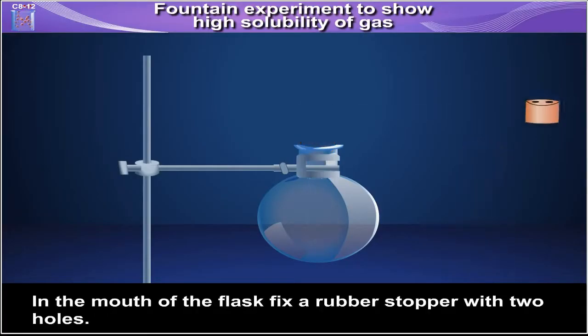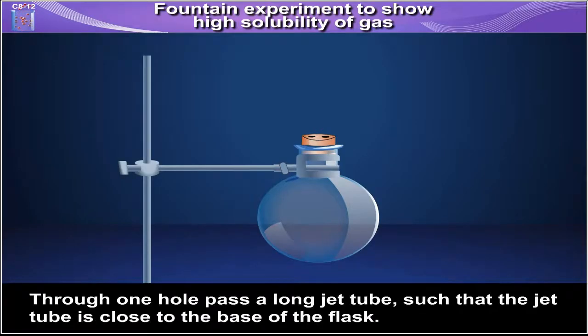In the mouth of the flask, fix a rubber stopper with two holes. Through one hole, pass a long jet tube such that the jet tube is close to the base of the flask.